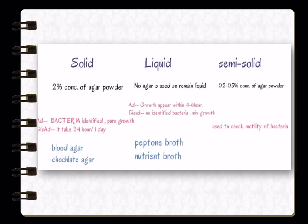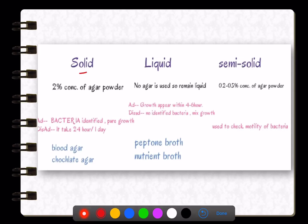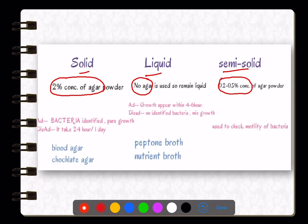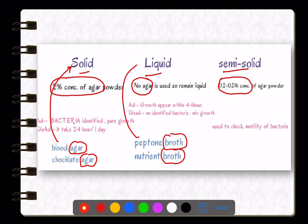There are three types of culture media: solid, liquid, and semi-solid. Solid media contains 2% agar. If there is no agar, it is liquid medium. If agar concentration is low — 0.2 to 0.5% — it is semi-solid. Whenever 'agar' is mentioned in the media name, it is solid in nature; whenever 'broth' is mentioned, it is liquid in nature.